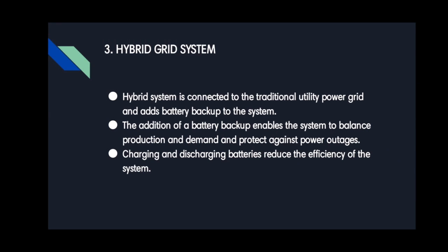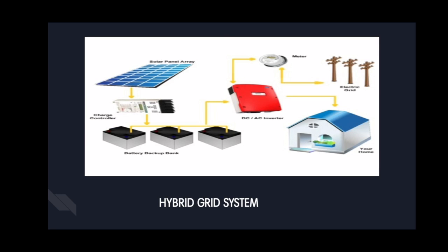The hybrid system is also connected to the traditional utility power grid and adds battery backup to the system. The addition of battery backup enables the system to balance production and demand and protects against power outages. Solar electric system production depends on the availability of sunlight. When sunlight is high, production can be exceeded.